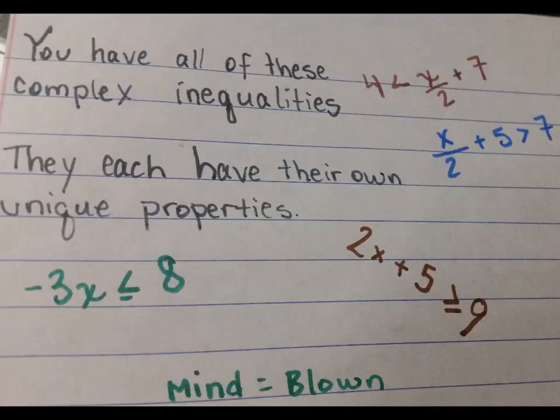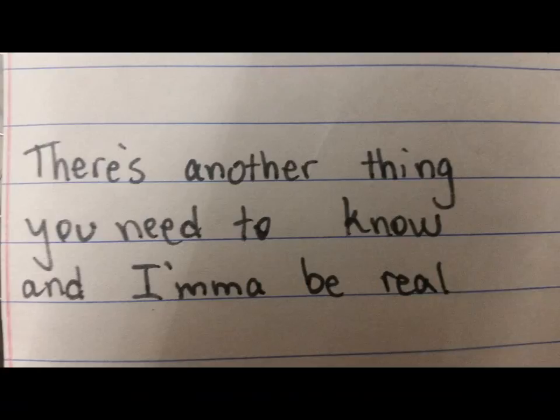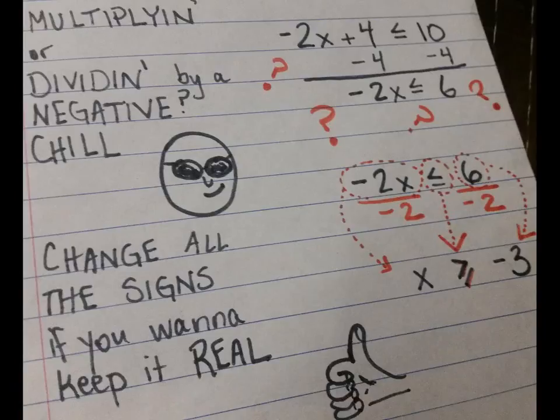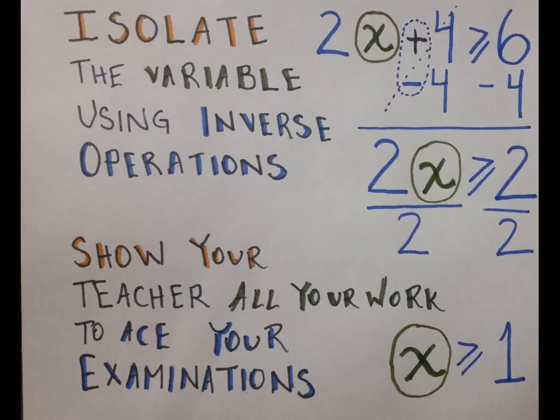I'm about to drop some mathematical verses and I'ma do it right without any curses. You have all of these complex inequalities, they each have their own unique properties. There's another thing you need to know and I'ma be real: if you add or subtract them the sides stay still, but multiplying or dividing by a negative, change all the signs if you want to keep it real.